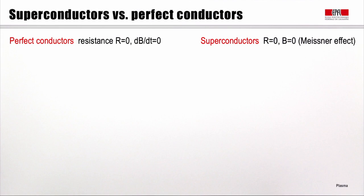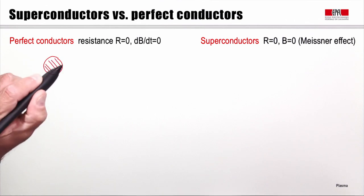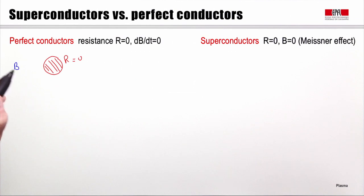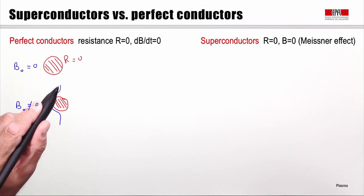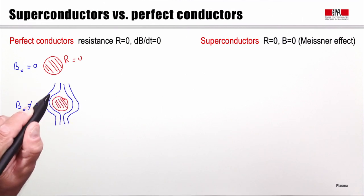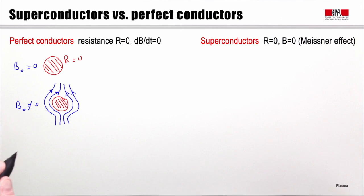Let us briefly discuss the differences between superconductors and perfect conductors. By perfect conductors, we mean a sample that has zero resistance and therefore prevents variations of the magnetic field with time. If we start from a situation with no applied field and then apply a field, the zero resistance of the sample prevents the field lines from entering into it. So the field lines have to go around the sample. When we remove the field, the sample stays in its state of zero resistance and no field inside.